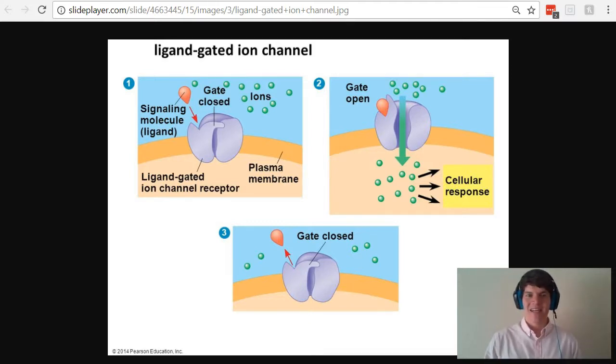Let's first talk about ligand-gated ion channels. In this case, a ligand binds to a protein located in the membrane, causing it to open up and allow ions to flow in, which then causes an internal cellular response.